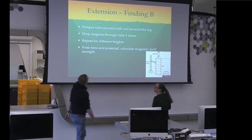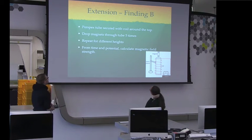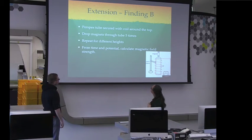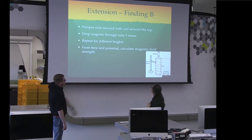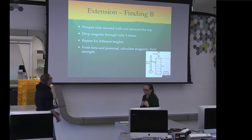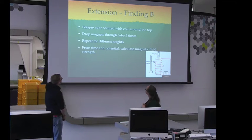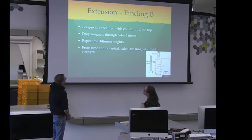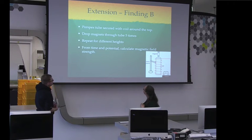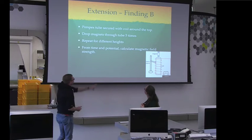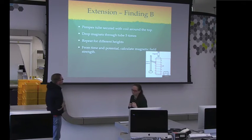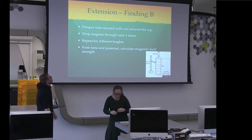And now I will quickly talk about our extension with finding the B field. And we used, as you can see over there in this nice diagram, a perspex tube that was secured with a coil around the top. And we dropped magnets through the tube five times and then we repeated that for different heights. And then from the time and the potential that we measured, we could then calculate the magnetic field strength of the magnet that was falling through the tube.